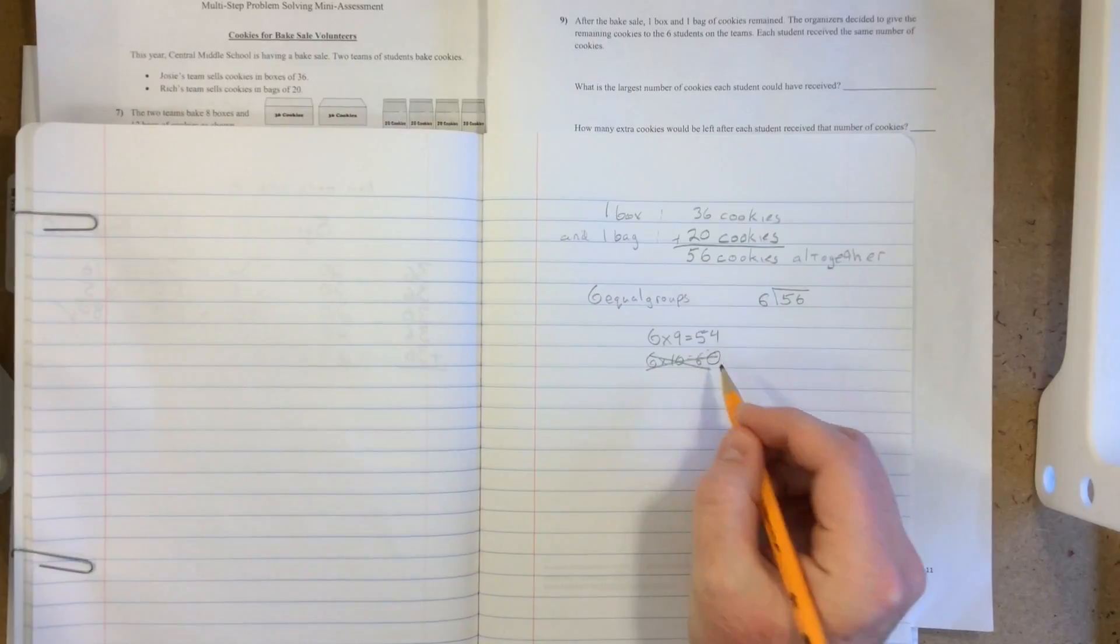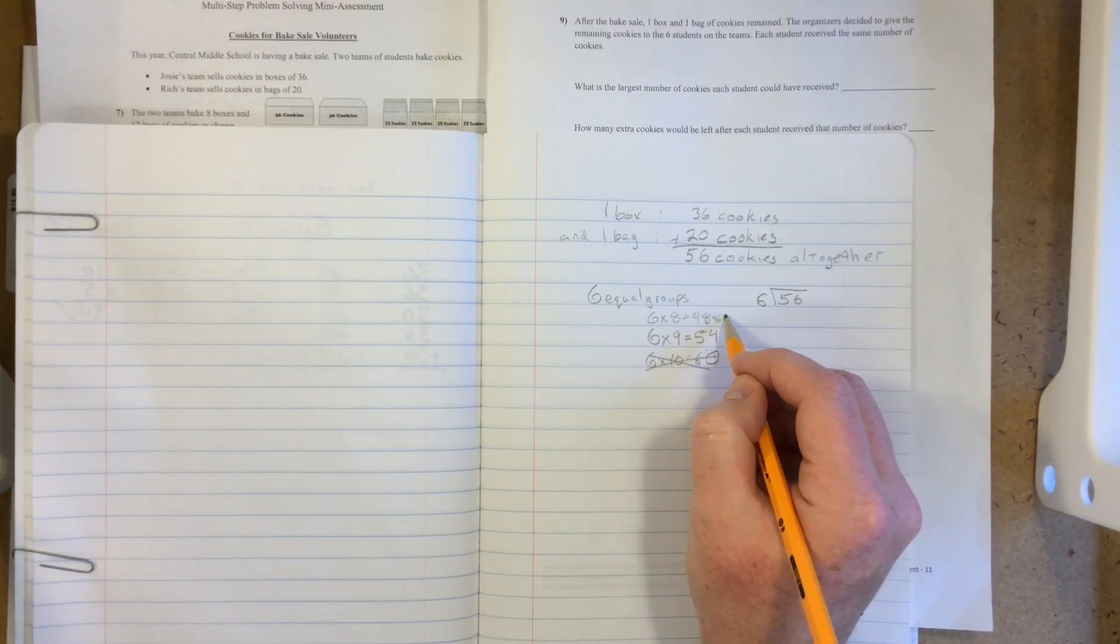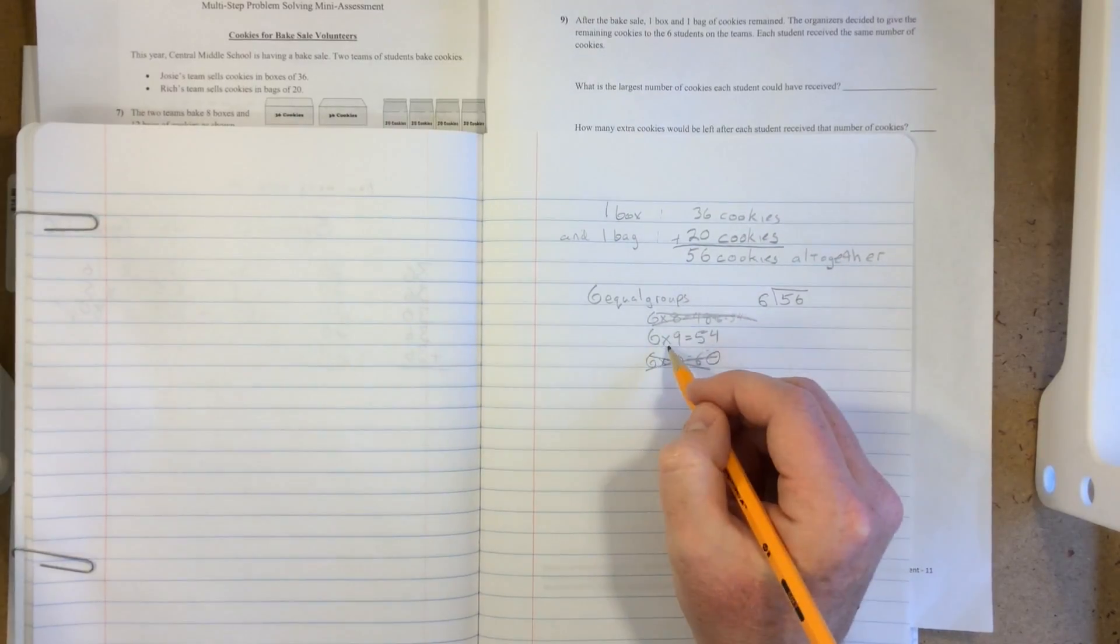If we did 6 times 8, that's 48, and there's another 6 before you even get to 56. So we know that 56 divided by 6 is 9.